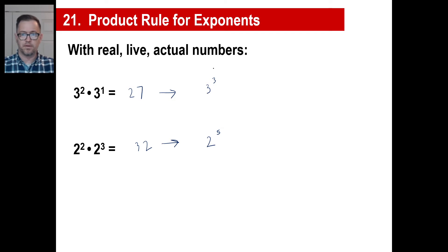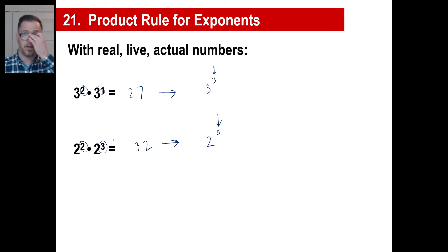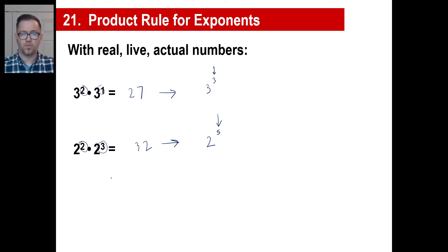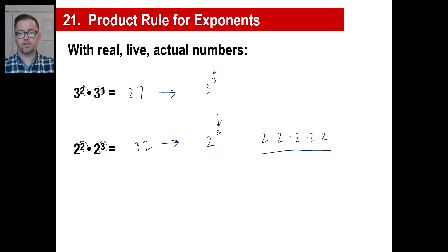Look at these numbers. So what rule have we figured out here, which actually works with real numbers? 3 to the second times 3 to the first is 3 to the third — we just added the exponents. 2 to the second times 2 to the third is 2 to the fifth, which is 2 plus 3. You can write it out: 2 squared is two 2s, times 2 to the third is three more 2s — there are five 2s total, so of course it's 2 to the fifth.